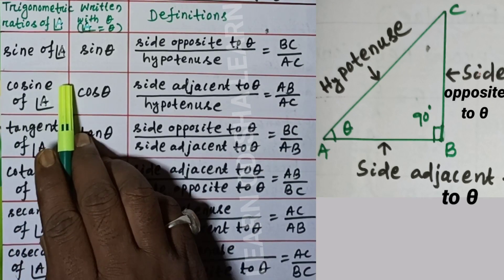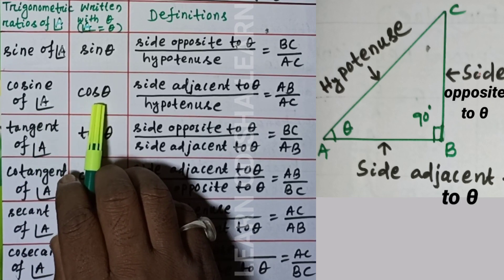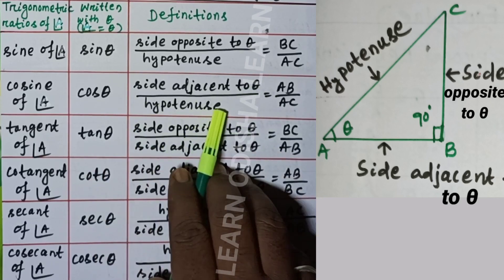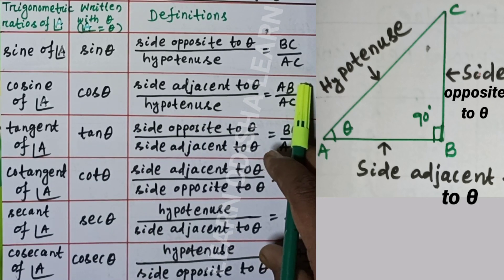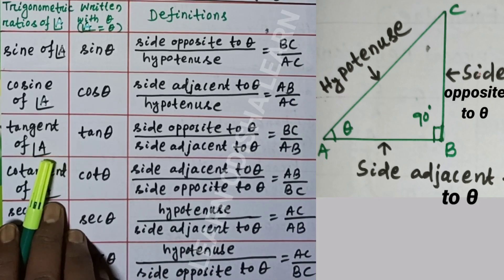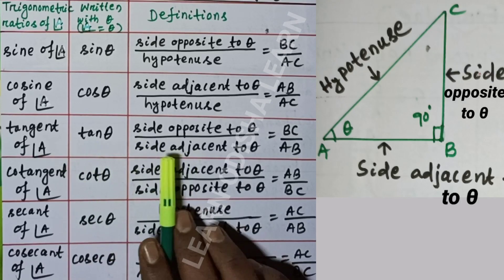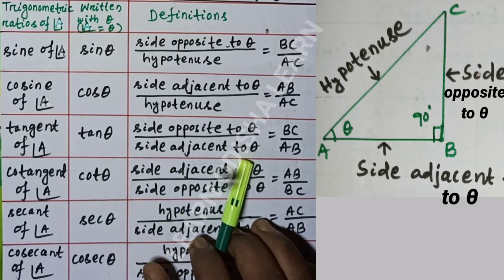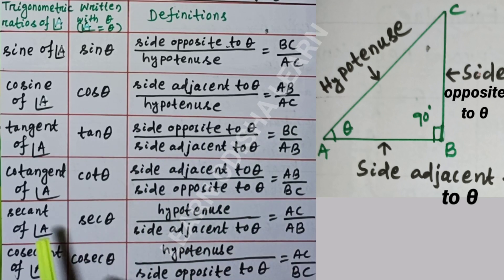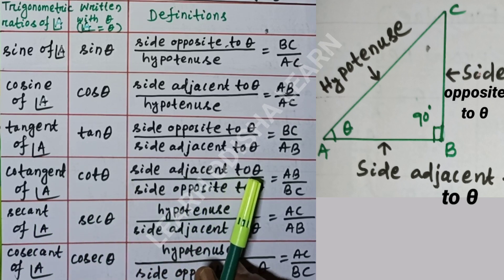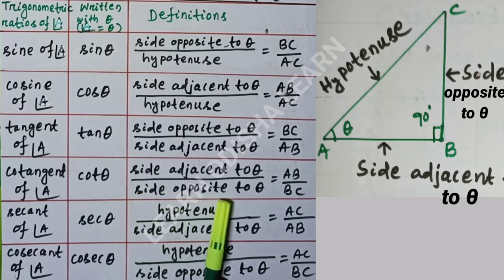Cosine of angle A — cos theta — is side adjacent to theta divided by hypotenuse, that is AB by AC. Tangent of angle A — tan theta — is side opposite to theta divided by side adjacent to theta, that is BC by AB. Cotangent of angle A — cot theta — is side adjacent to theta divided by side opposite to theta, that is AB by BC.